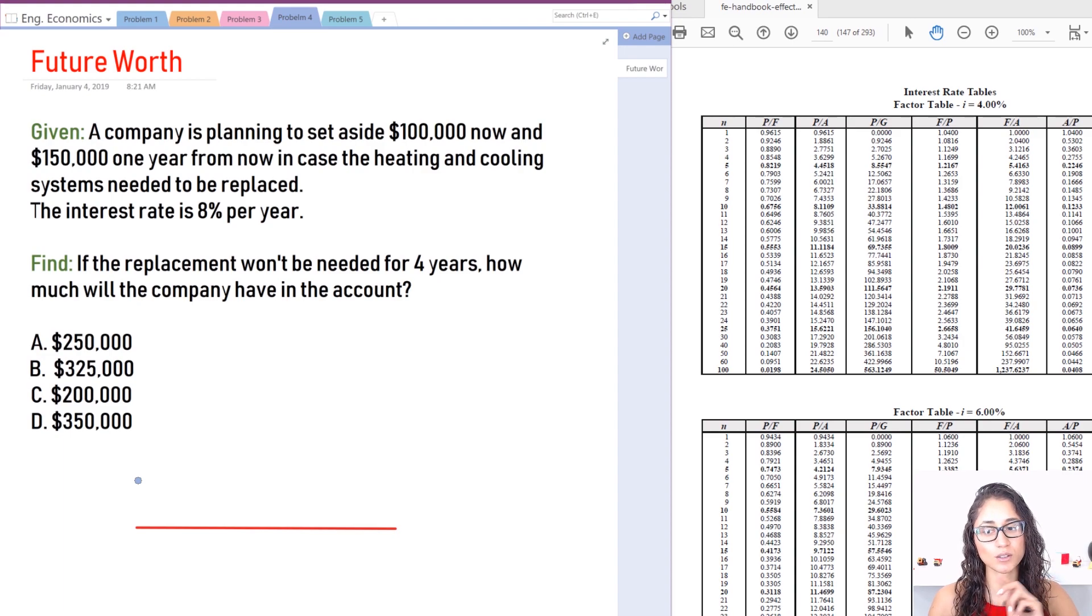Okay guys, so this question is a little bit more difficult than what we previously did, but I still found it really easy, straightforward. That's how I found engineering econ problems are in general. As long as you know your cash flow diagrams, I think you should be set.